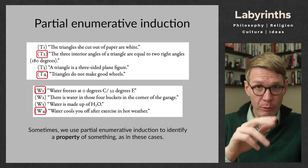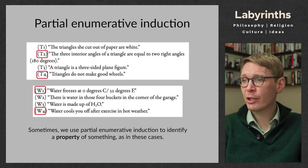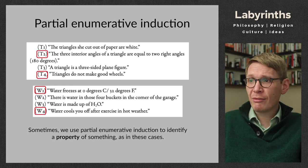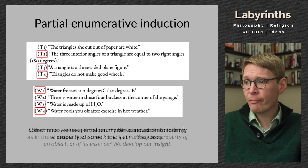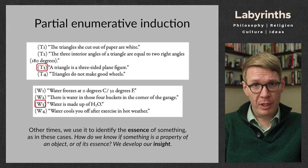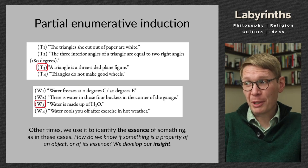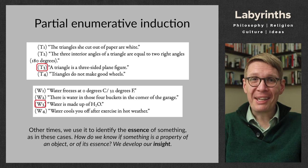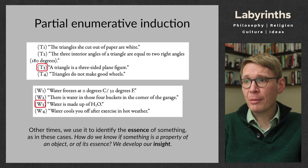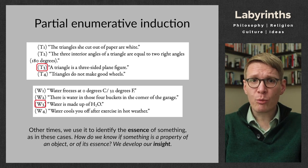And that is what makes science science — an openness to new evidence that will challenge the current consensus. The scientific community is important because it involves many people exercising judgment about what counts as reliable and sufficient. Sometimes we use partial enumerative induction to identify a property of something, and other times to identify the essence of something. How do we know if something is a property or an essence? We develop our insight — the contention that insight can yield understanding of what is essential versus merely accidental.